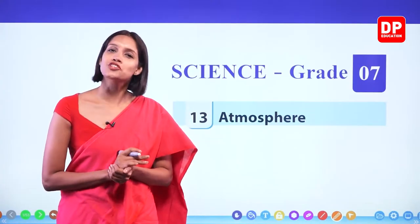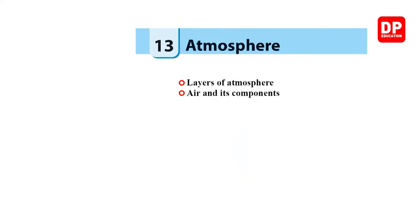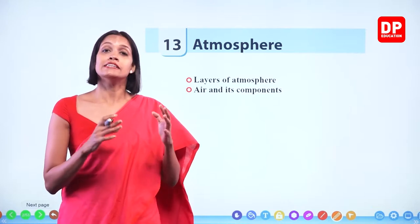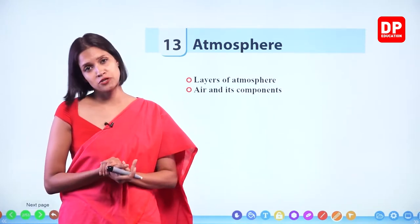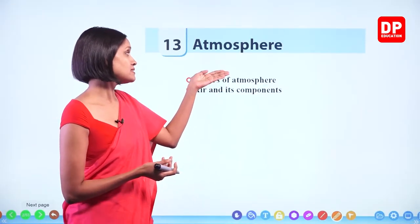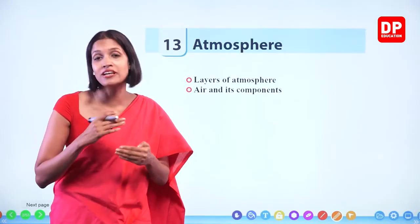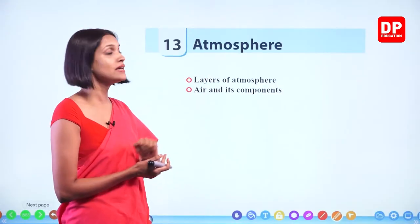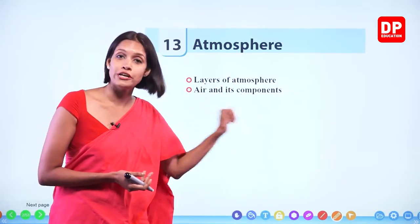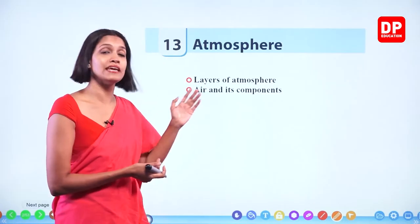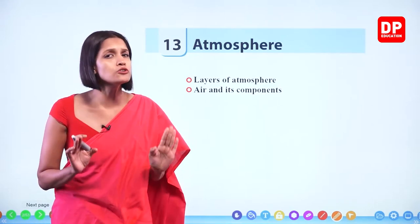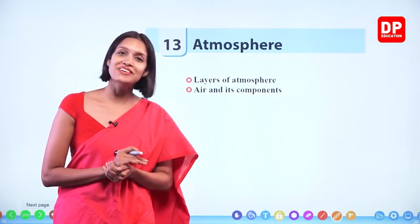We are going to learn this lesson under two main topics. The first is the layers of the atmosphere — the main air layer is divided into five other layers, and we'll learn about all five in detail. The second topic is air and its components — we'll learn that air is a mixture of different gases, what types of gases are present, and also about air pollution.